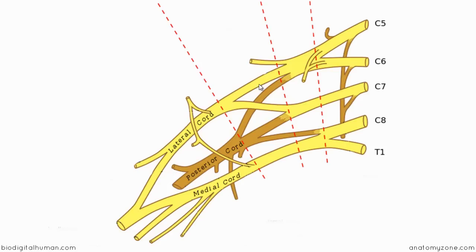To illustrate the axillary artery relationship: C5 and C6 unite to form the superior trunk, C7 forms the middle trunk, and C8 and T1 unite to form the inferior trunk. Each trunk has an anterior and posterior division. The superior trunk's anterior division contributes to the lateral cord; its posterior division contributes to the posterior cord. The middle trunk's anterior division contributes to the lateral cord and the posterior to the posterior cord. The inferior trunk's posterior branch contributes to the posterior cord and the anterior branch forms the medial cord. All posterior branches from the three trunks converge to form the posterior cord.